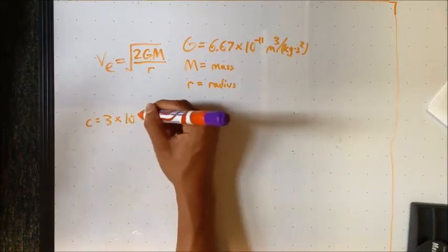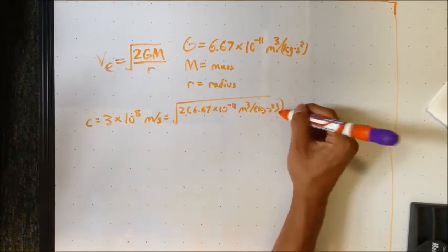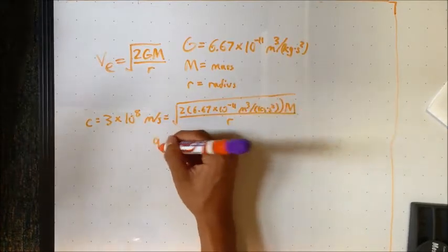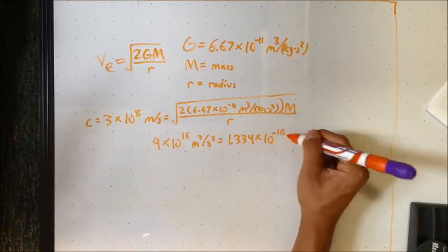The formula for escape velocity is the square root of the quantity of two times the gravitational constant times the mass of the object all over its radius.